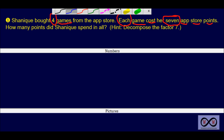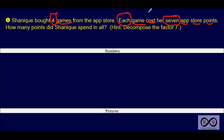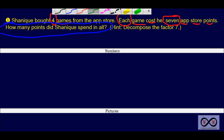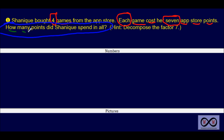Now the next sentence — we have something different going on here. How many points did Shanique spend in all? As you can see, we have a question asked here. And oftentimes at the end of a word problem or story problem, you see your math job in the form of a question at the end. That's exactly what we have going on here. So our math job is to find out how many points Shanique spent in all.